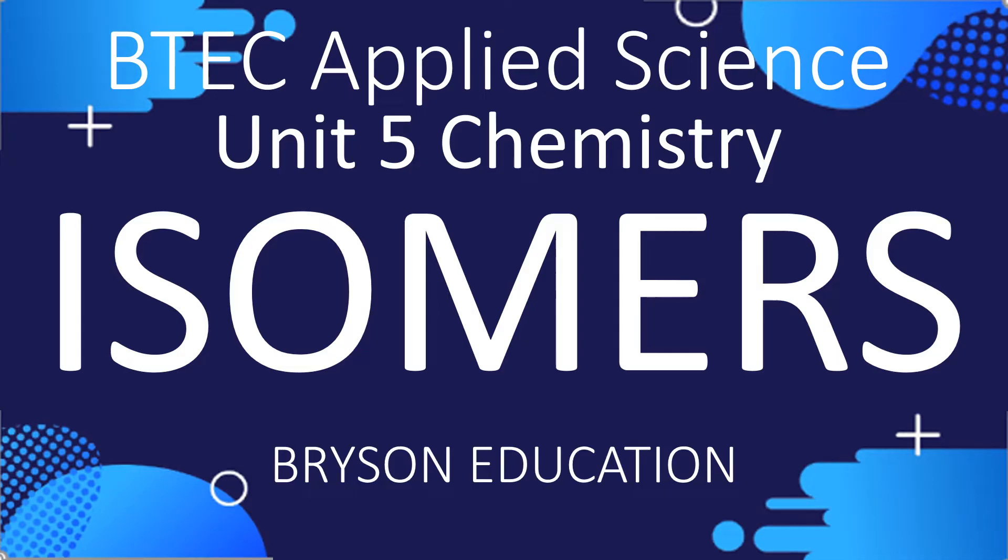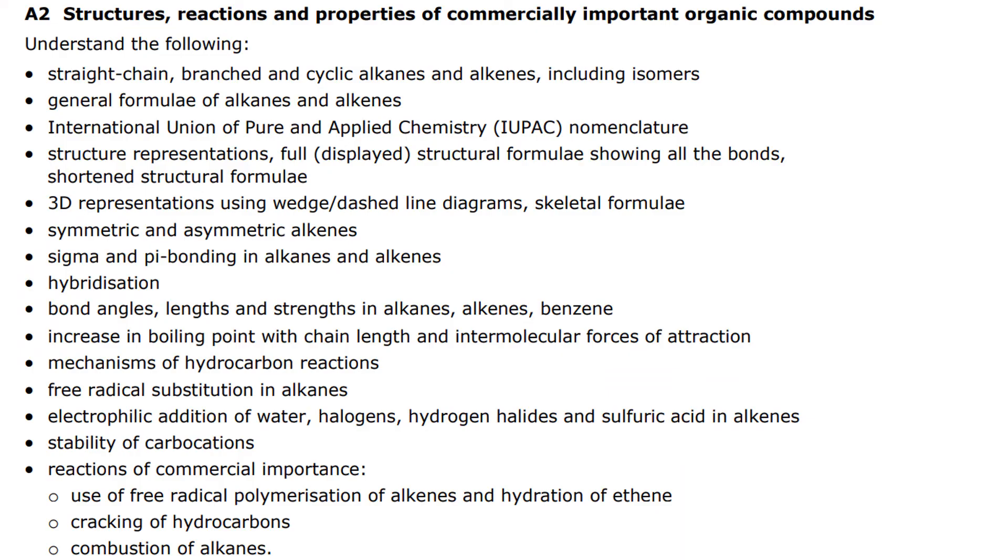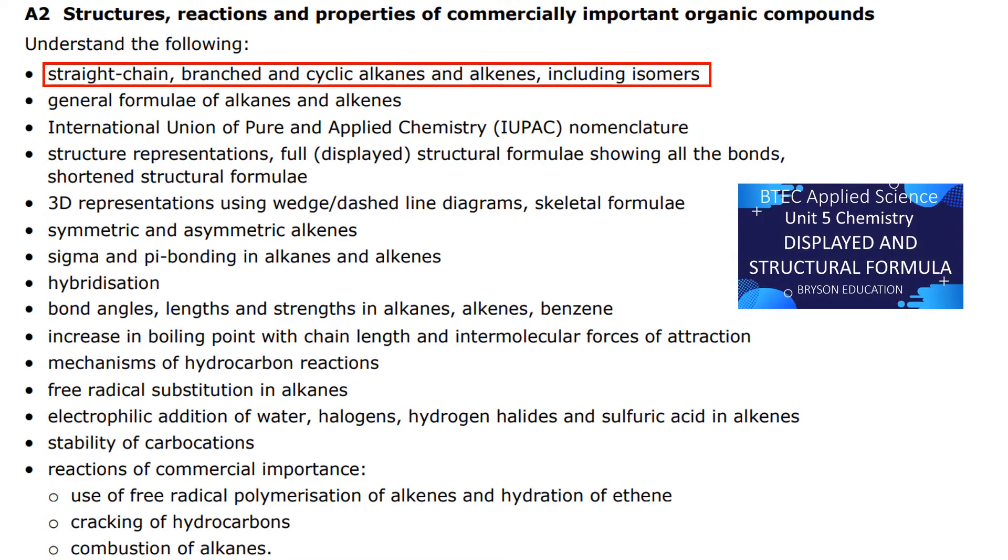Hello there, welcome to my channel on chemistry lessons. This is a BTEC Applied Science Unit 5 chemistry, and we're going to be looking at isomers under learning aim A2, right at the very beginning part of the introduction. If you haven't seen previous videos that look at the different types of formula such as displayed, structural, and skeletal, I do suggest you start there first, and you will find some links in the description below.